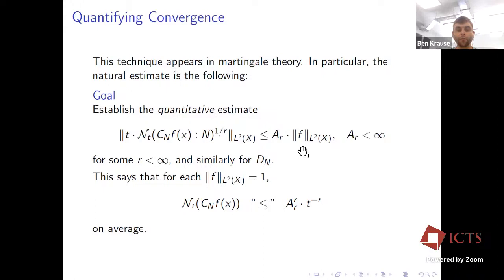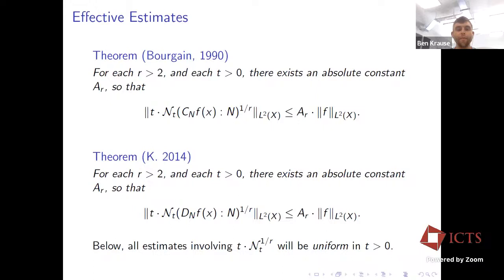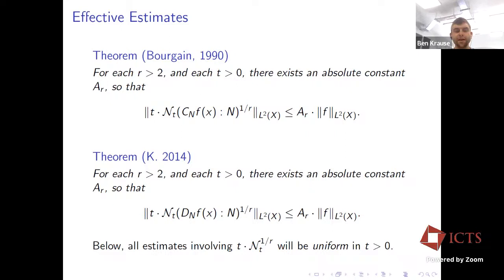More formally, the plan is to exhibit some finite R so that we have this type of norm bound, which forces the jump-counting function to be finite-valued almost everywhere. Bourgain proved that for each R > 2 and every T > 0, we can bound this jump-counting function by the initial data. In grad school I extended this to the case of the squares. Bourgain knew this result — I just don't think he bothered writing it down. In some sense the jump-counting estimate is implicit in his work.